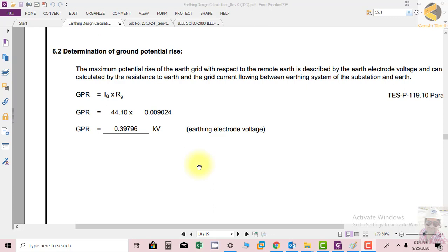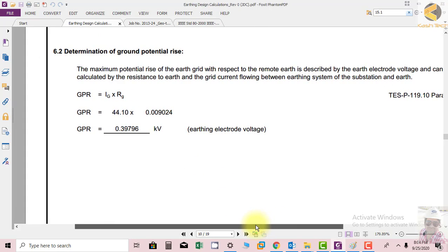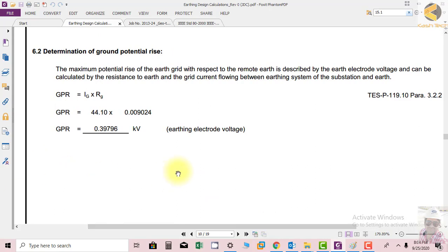The maximum potential rise of the grid with respect to remote earth is described by the earth electrode voltage and can be calculated by the resistance to earth and the grid current flowing between the earthing system of the substation and earth.